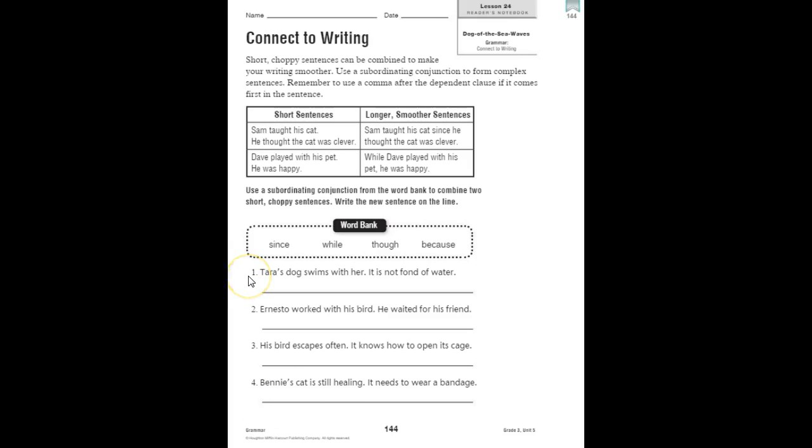So let's look at the first one. Tara's dog swims with her. It is not fond of water. Think about how you could use one of the subordinating conjunctions from the word bank to combine these two simple sentences. I would probably use though. Tara's dog swims with her, though it's not fond of water. So I would write that new sentence on the line.